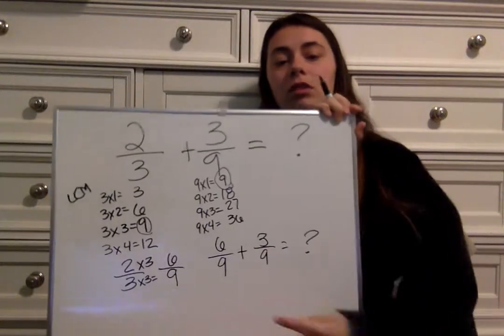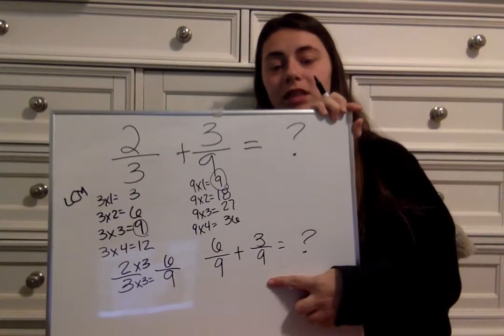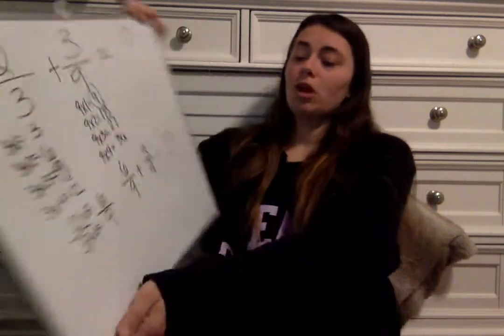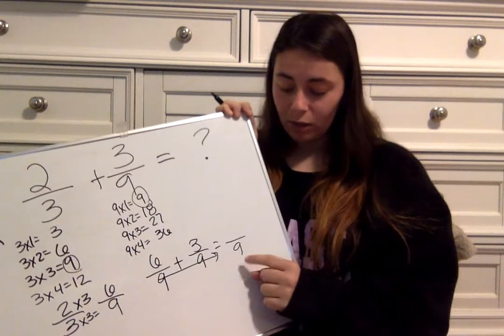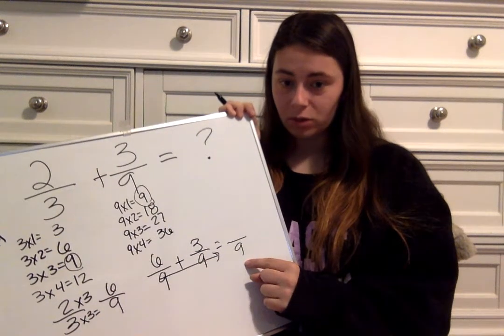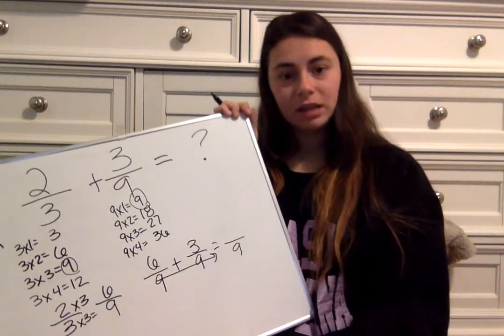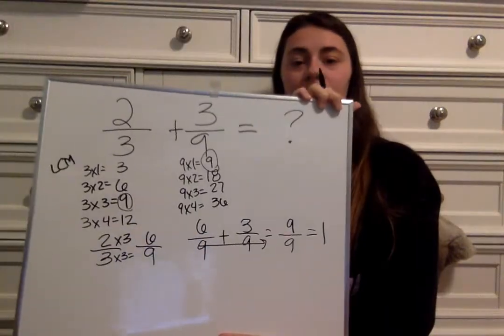Do we have common denominators now? Nine and nine — I would say we do. And now we can just add the numerators. The nine is going to stay on the bottom because we're not adding nine and nine — we're keeping it. We already have the same common denominator, so nine stays. And then six plus three is nine. Look at that, we have a whole number now. Nine over nine also equals one whole.